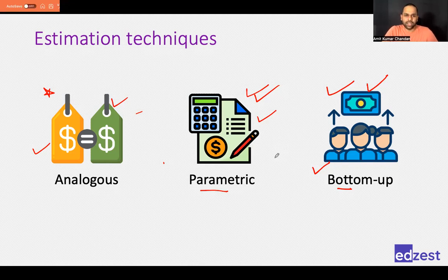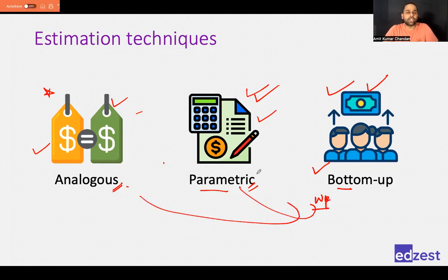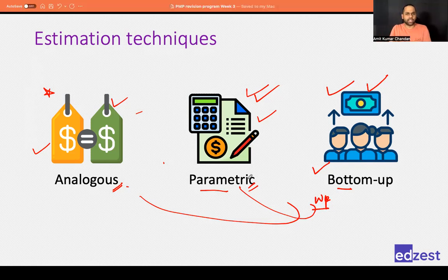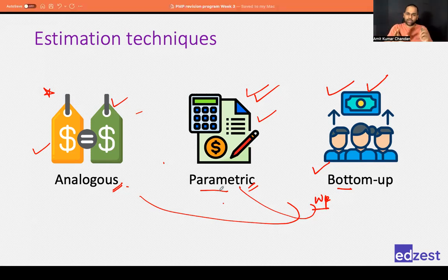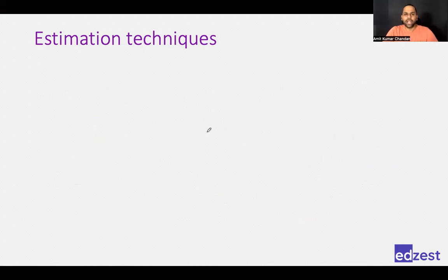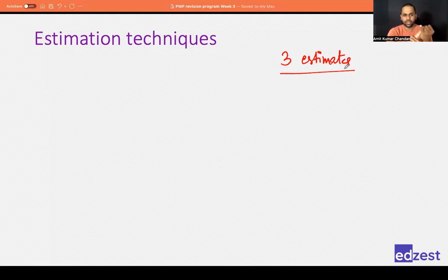What if we don't have historical information? We cannot use analogous or parametric, and even for bottom-up work packages, we may need something else. In traditional projects, we could be doing many activities for the first time. In such cases, we call all relevant team members into a meeting and ask them to provide three different estimates.